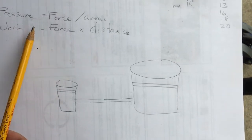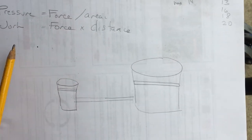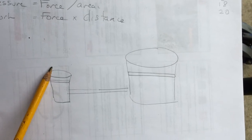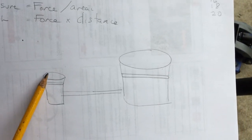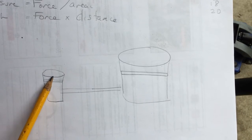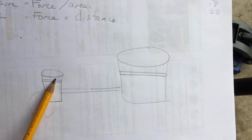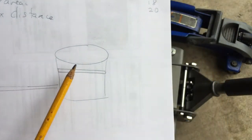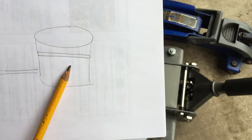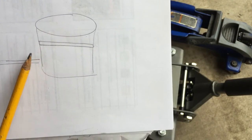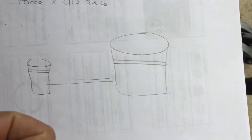Pressure is force over area. If you put a small force in here, force over a small area of the cylinder is one pressure, and you get out a larger force over a larger area to keep the pressure the same, right?